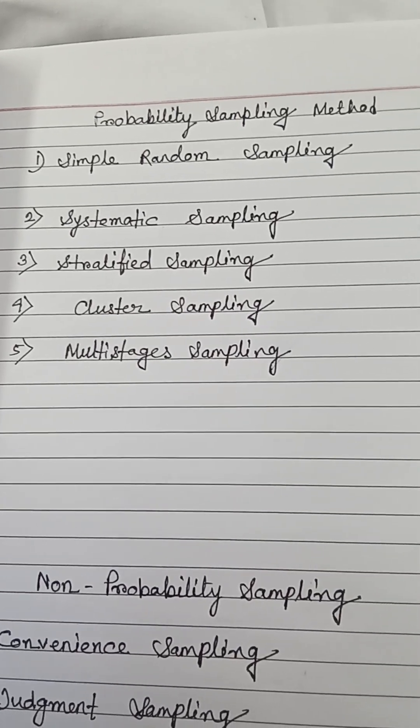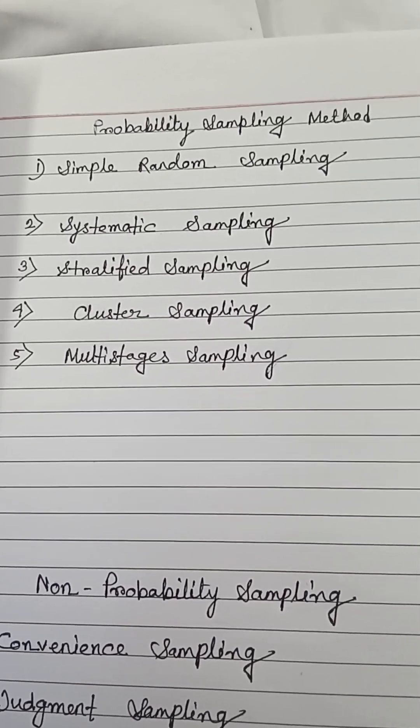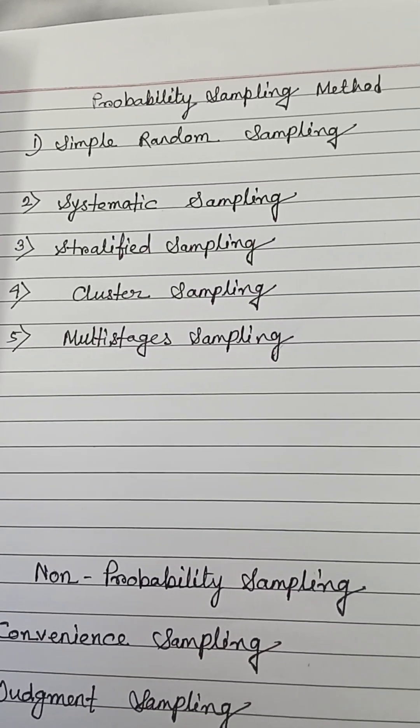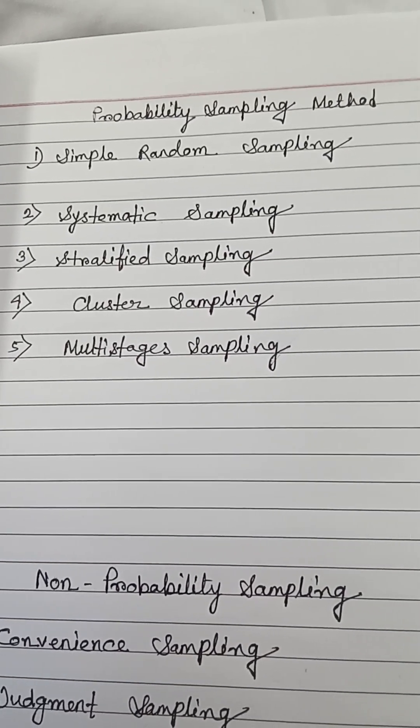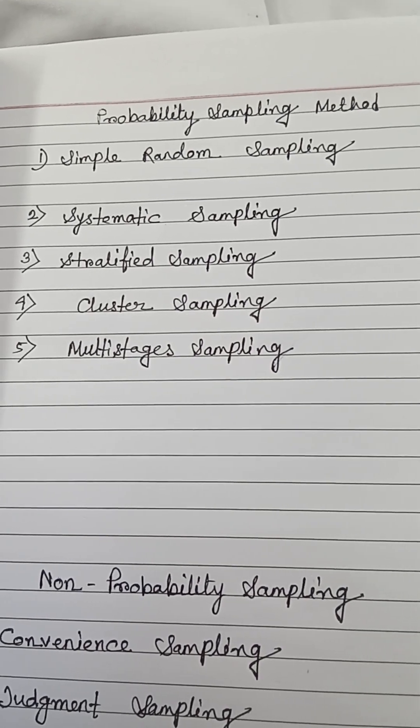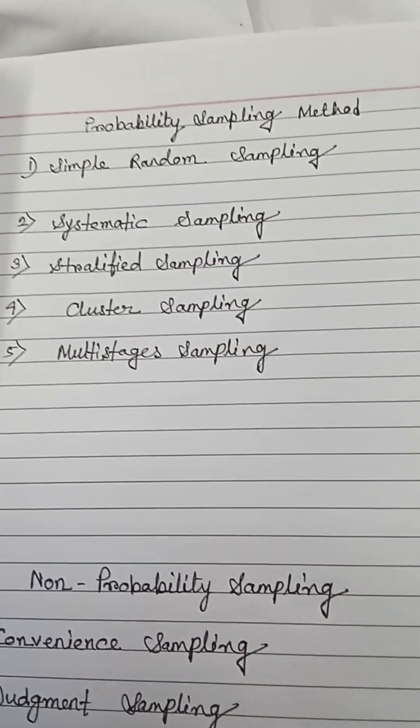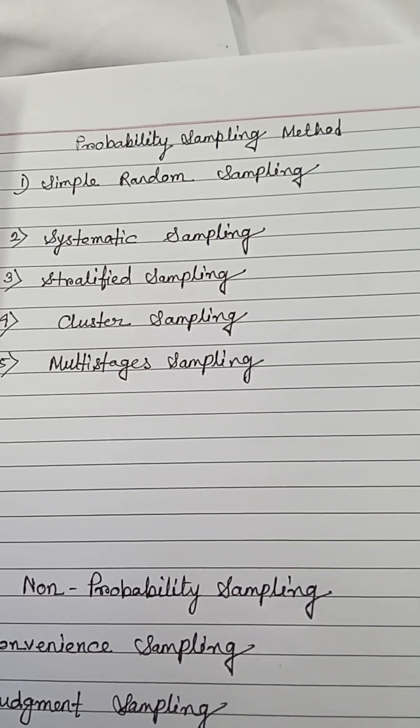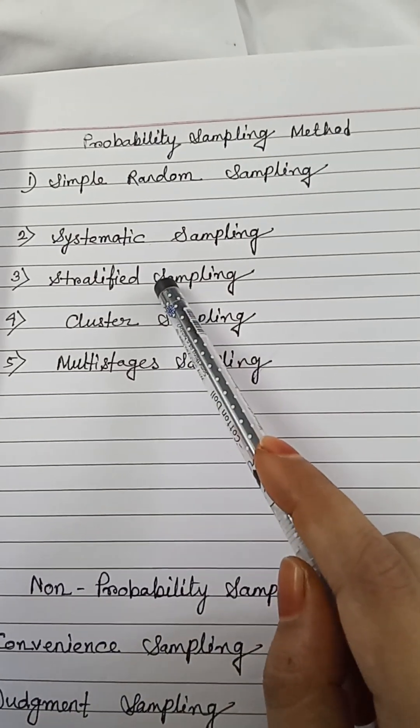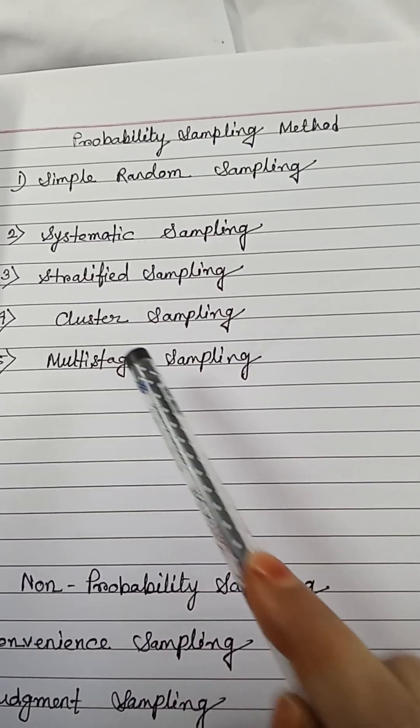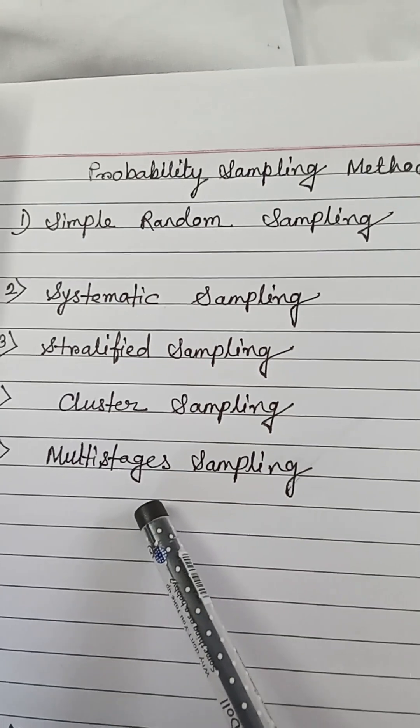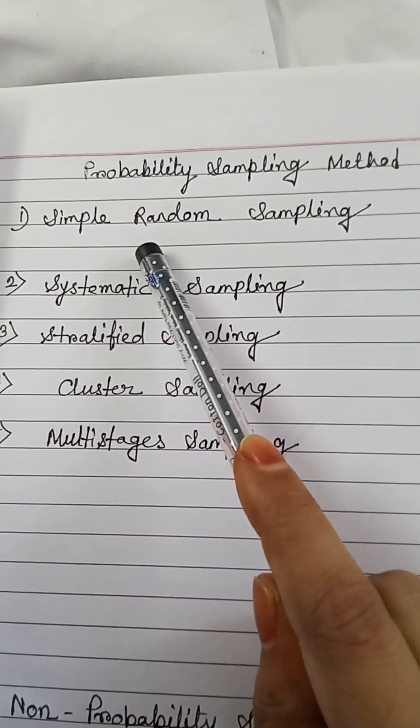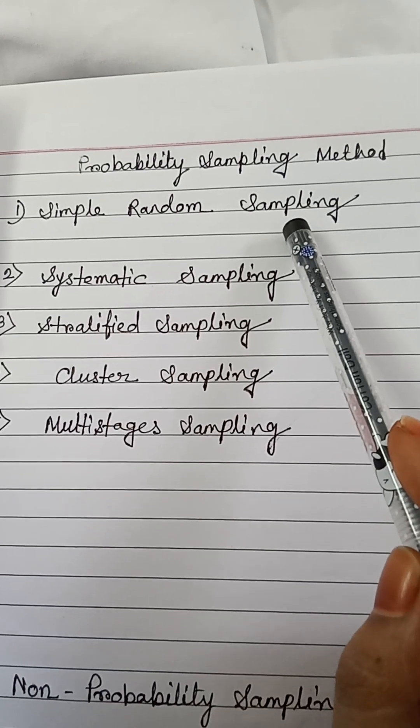Hello everyone, today I will discuss probability sampling and non-probability sampling. In probability sampling there are five types: simple random sampling, systematic sampling, stratified sampling, cluster sampling, and multistages sampling.